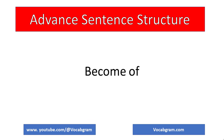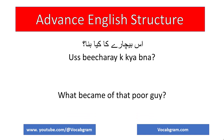The verb is 'become of.' The form of the sentence changes according to the tense. For example: 'What became of that poor boy?' — because it is a past indefinite sentence, we use the second form: 'became.' So: 'What became of that poor boy?'